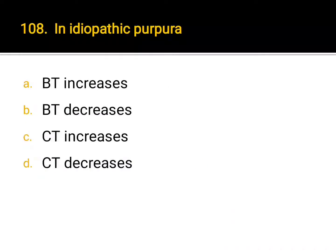In idiopathic purpura: A. BT increases, B. BT decreases, C. CT increases, D. CT decreases. Correct answer: A. BT increases.